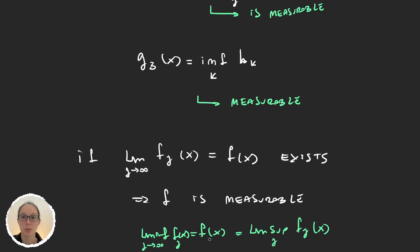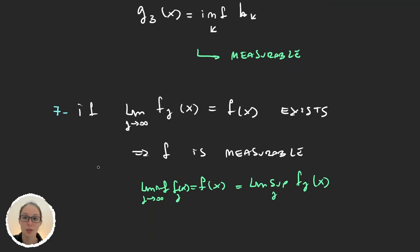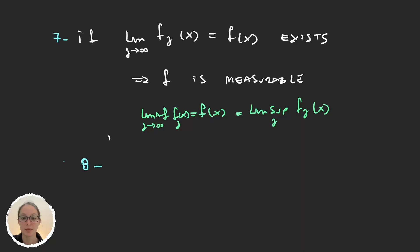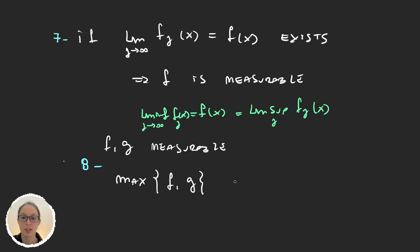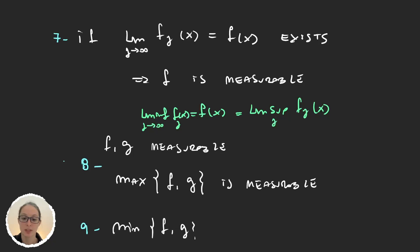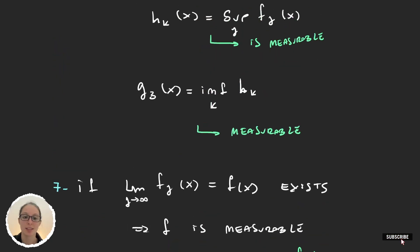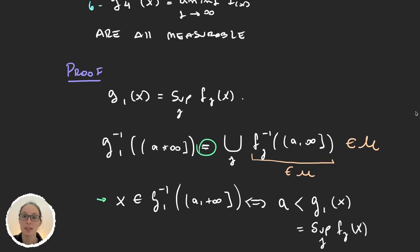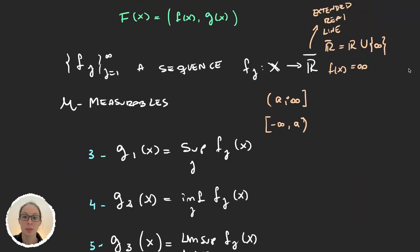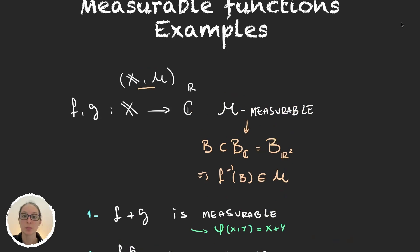Another consequence is that if f and g are measurable, then the maximum of f and g is measurable, and obviously the minimum of f and g is also measurable. So there you have it — nine examples of measurable functions. In the next video, we will be talking about a very important family of functions called the simple functions.